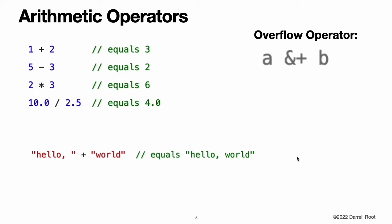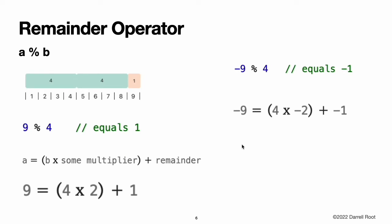The addition operator is also supported for string concatenation. The remainder operator, a % b, works out how many multiples of b will fit inside a and returns the value that is left over, known as the remainder. Note: the remainder operator is also known as the modulo operator in other languages. However, its behavior in Swift for negative numbers means that, strictly speaking, it is a remainder rather than a modulo operation.